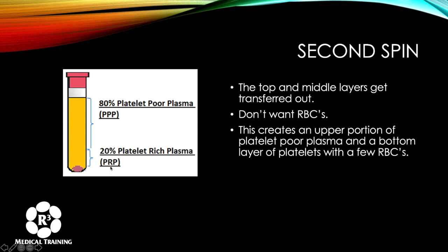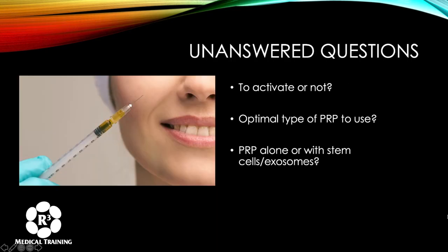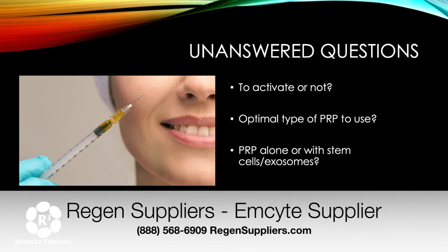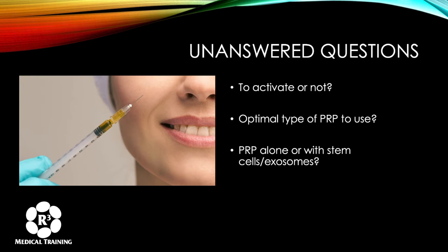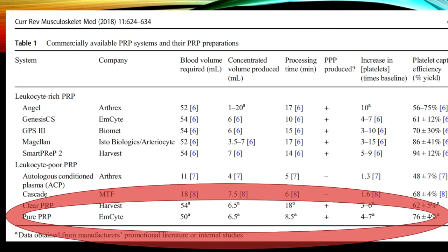Questions that remain to this date include: should you activate it or not, what's the optimal type of PRP to use, should you use leukocyte-rich with just one spin or do a second spin for leukocyte-poor, or should you use PRP by itself or along with stem cells and/or exosomes? There's no gold standard, and we'll go through some answers to these moving forward.